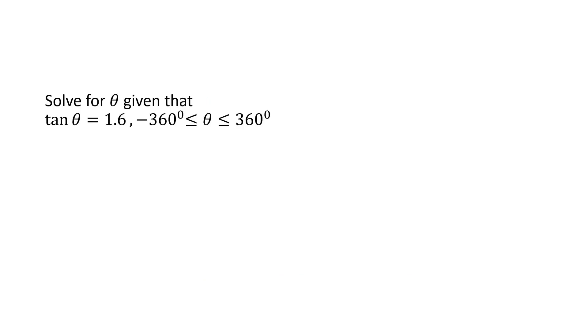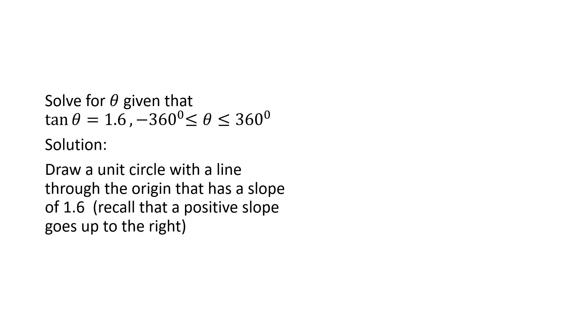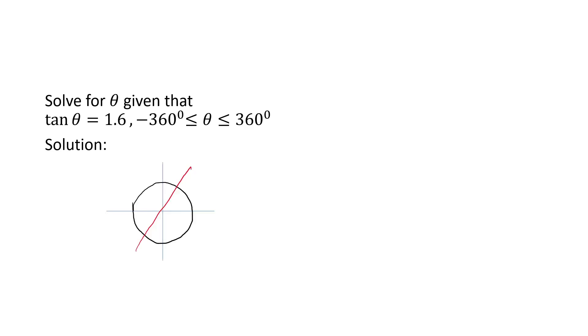Let's say we want to solve for theta given that tan theta is 1.6 and theta lies between negative 360 degrees and 360 degrees inclusive. What we're going to do is draw a unit circle with a line through the origin that has a slope of 1.6. For this, you don't have to be super precise. Just recall that a positive slope goes up to the right. There we go.